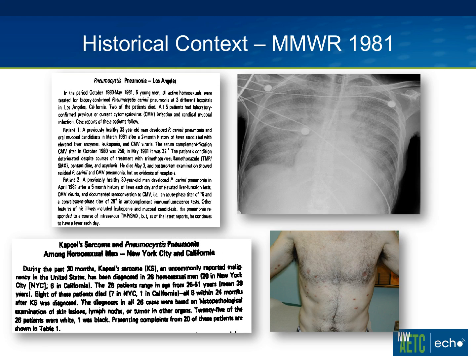This is just to remind us all that OIs kind of ushered in the HIV-AIDS era in the early 1980s. There were reports in the MMWR first of atypical pneumonia that ended up being PCP among five gay men in Los Angeles, and shortly after that, 25 or so gay men in New York and California were reported to have an aggressive and metastatic form of Kaposi sarcoma. It wasn't until 1983, two years later, that the AIDS virus was discovered and its connection to immunodeficiency and how that is responsible for these opportunistic infections.